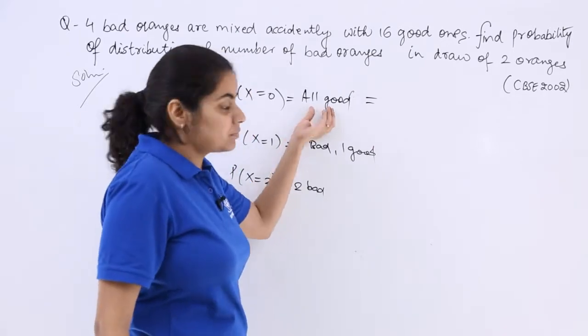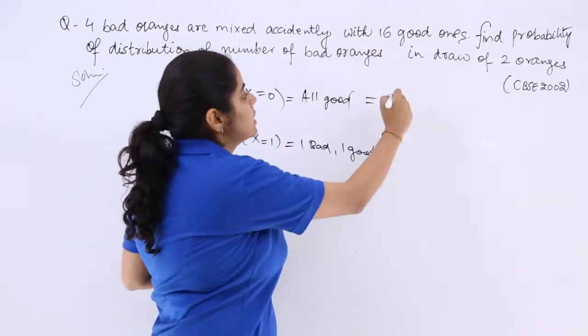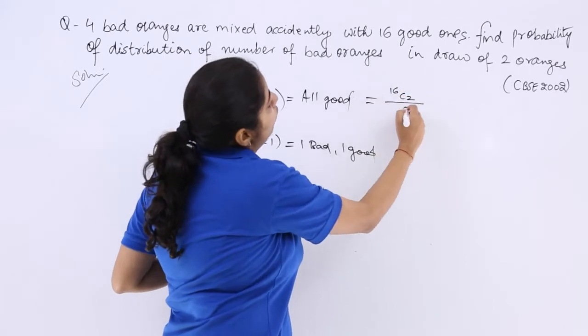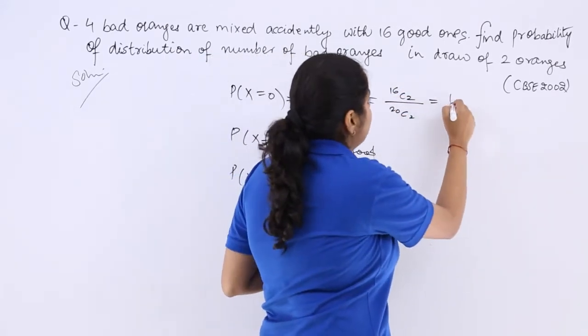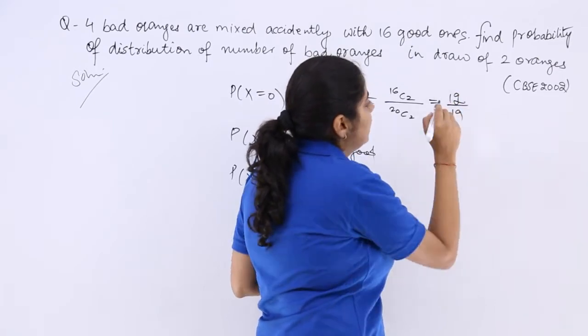All good, X equals 0, so that means 16C2 over 20C2 which gives on calculation and cancelling something as 12 over 19.